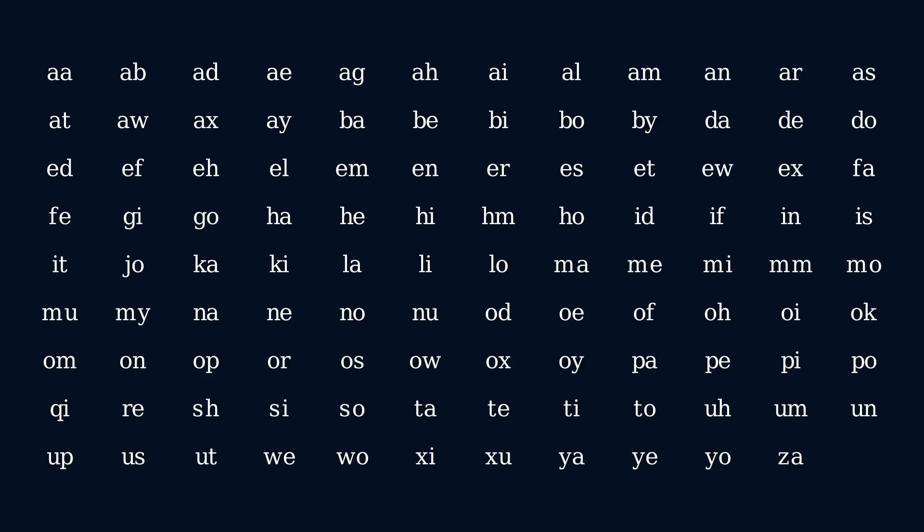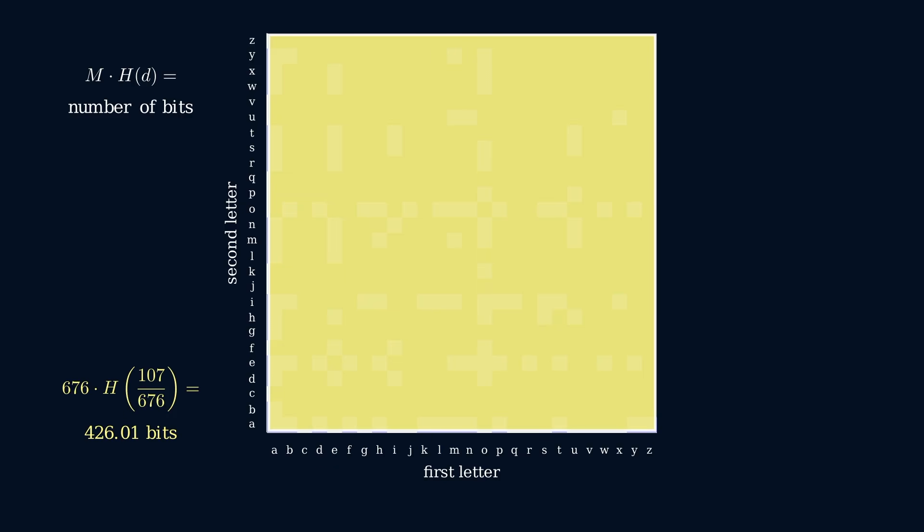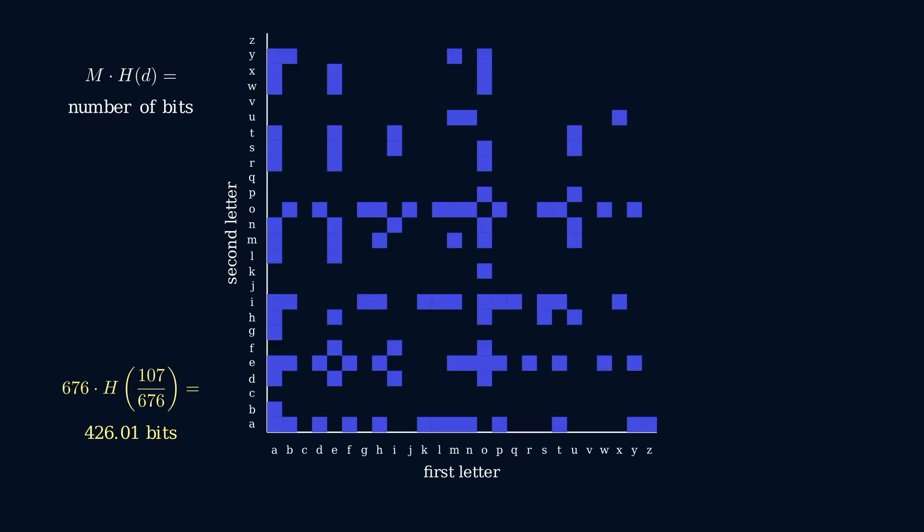To see how we can squeeze our program even smaller, consider first the simpler problem of encoding the set of two-letter Scrabble words. By using the same approach as before, we can encode this set in about 426 bits. However, doing so ignores some exploitable patterns in the data.